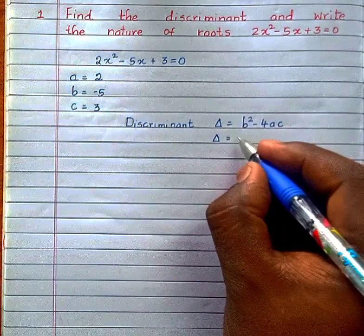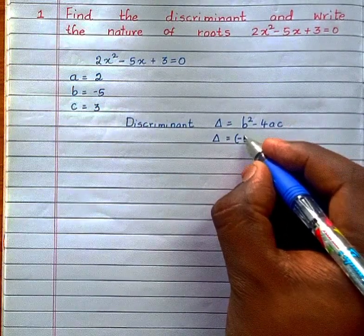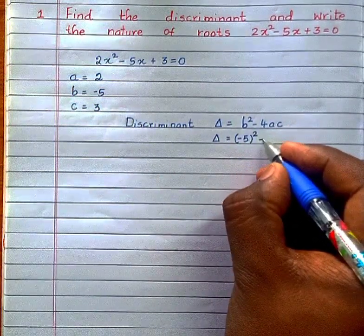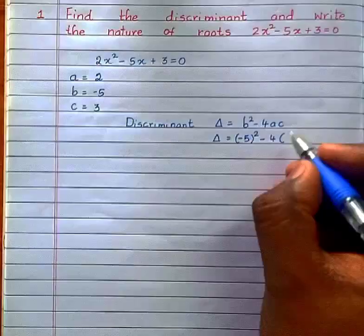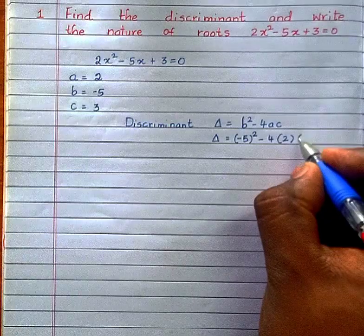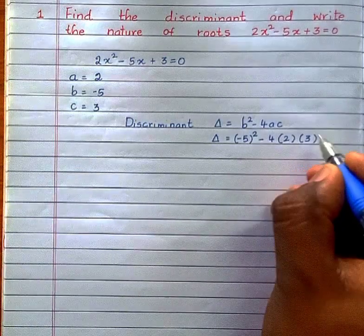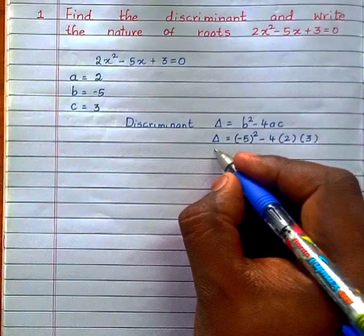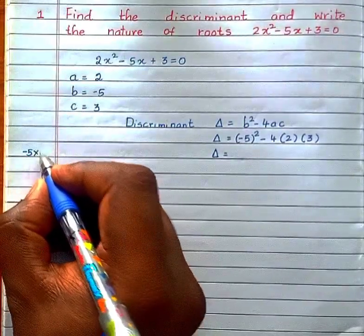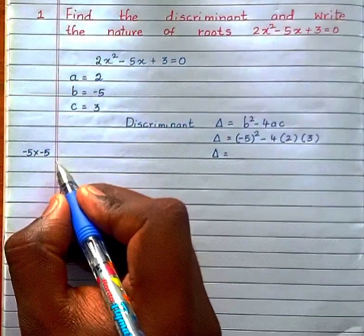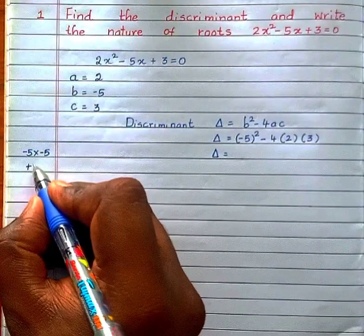Now, Δ equals, substitute the value of a, b and c. In this equation we get (-5)² - 4 × 2 × 3. Now, Δ = (-5)² = (-5) × (-5). We get minus into minus plus, so 25.